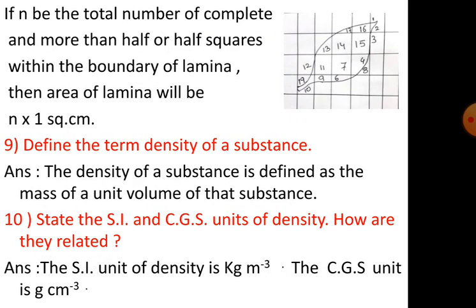If n be the total number of complete squares and more than half or half squares within the boundary of lamina, then the area of lamina will be n into 1 square centimeter. We will add all these squares: half squares, more than half squares and the total number of squares.